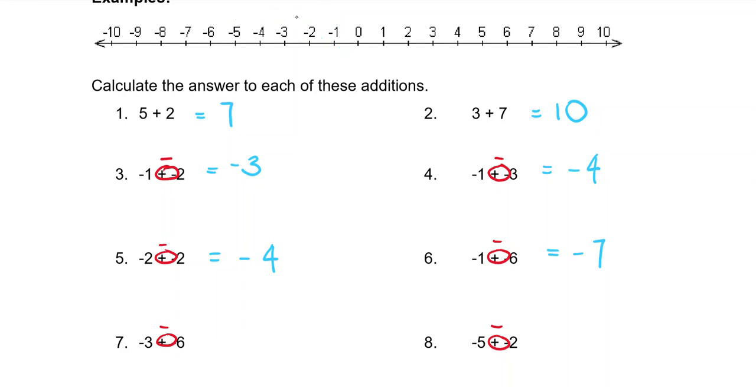Question 7, we start at negative 3 and we want to subtract 6: 1, 2, 3, 4, 5, 6 means the answer is negative 9. Question 8, we start at negative 5 and we are subtracting 2. So always to the left: 1, 2 to get to negative 7.